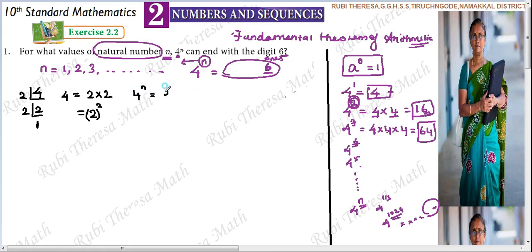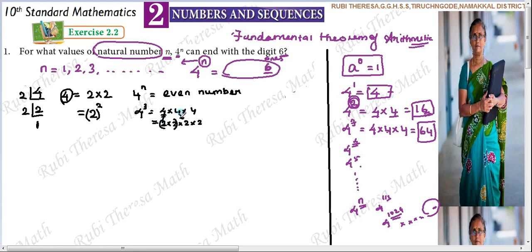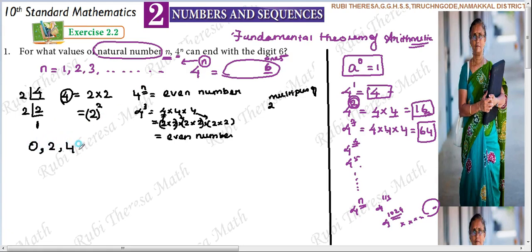Therefore 4 to the power N will always be an even number, because any number multiplied with 2 becomes even. Even numbers end with digits 0, 2, 4, 6, or 8. So 4 power N must end with one of these digits.